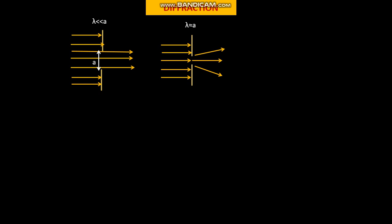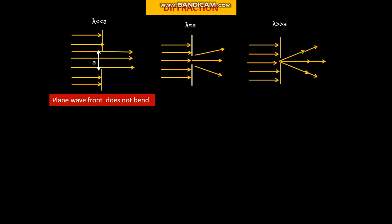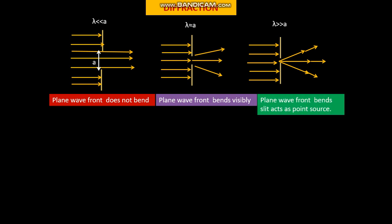We get the light like this and still smaller when lambda is much greater than A, then the bending is still more. So here the plane wave front does not bend if A is large. If it is little small then visibly it bends, and if it is very small then it acts as a point source of light.